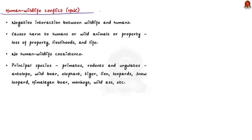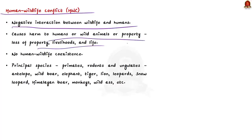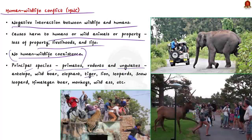Human-wildlife conflict is a negative interaction between wildlife and humans — when encounters between humans and wildlife lead to negative results causing harm. The harm can be to humans, wild animals, or property, including loss of livelihoods and even life. Basically, the action of one has an adverse effect on the other, meaning there is no human-wildlife coexistence. The principal species responsible for conflict are primates, rodents, and ungulates, including antelope, wild boar, elephant, tiger, lion, leopard, snow leopard, Himalayan bear, monkeys, and wild ass.